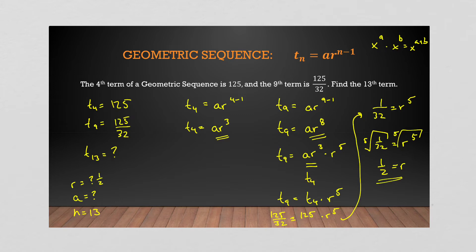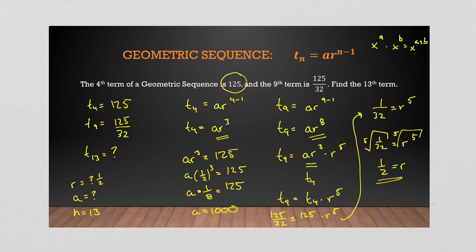Now we plug that ratio back in to solve for a. We know a · r³ = 125, so a · (1/2)³ = 125, meaning a · (1/8) = 125, so a = 1000. Now we have a = 1000, r = 1/2, and n = 13. Plugging into tₙ = a · r^(n−1): t₁₃ = 1000 · (1/2)^12, which gives t₁₃ = 125/512.